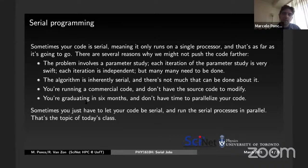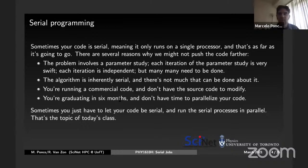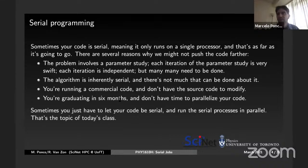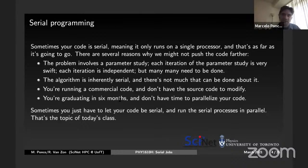Another reason is if you are running a commercial code and you don't have the source code to modify, there's not much you can do. Also, if you are graduating in six months, you're not going to parallelize that code in six months — just implementing and debugging might take a year. So sometimes you just have to let your code be serial and run the serial processes in parallel. That is what we're going to be discussing today. That doesn't mean you won't receive an email from us saying why are you running only one code on Niagara — that's not acceptable.